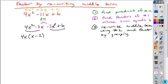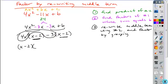From the second pair of terms, I can remove a common factor of negative 3. That leaves x - 2. If I've done this right, I should have a common binomial factor, x - 2. The remaining factors of 4x and negative 3 become the terms of my other binomial factor.